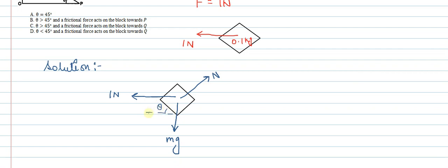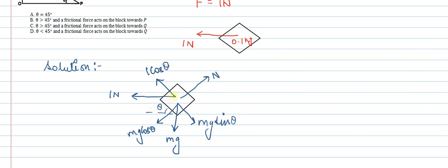If this angle is theta, then the component of mg along the incline is mg sin theta, and the component perpendicular to the incline is mg cos theta. If we resolve the external horizontal force of 1 newton as well, we get 1 cos theta up the incline and 1 sin theta opposite to the normal direction.